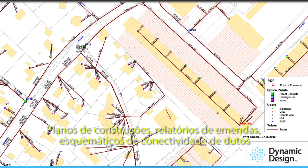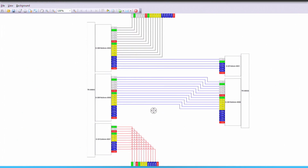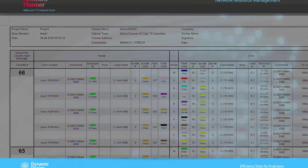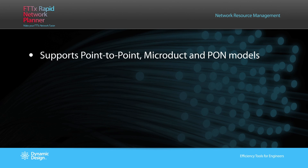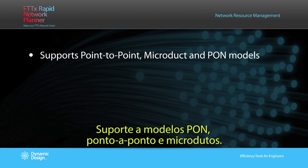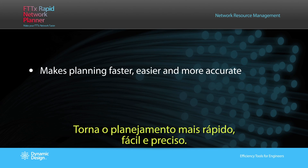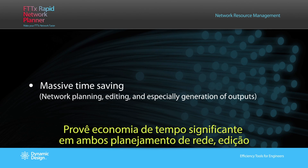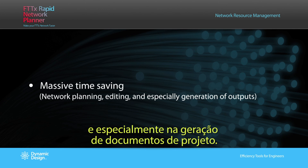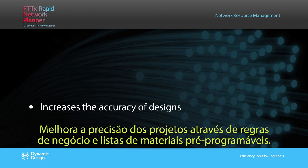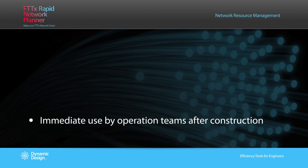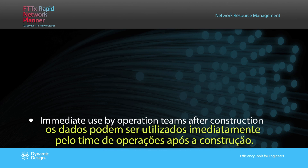Construction plans, splice reports, duct connectivity reports, plus a variety of additional standard and configurable reports are available. The key benefits of the planner are: it supports point-to-point, microduct and pond models; it makes planning faster, easier and more accurate; it gives massive time savings in network planning, editing and especially the generation of outputs; and it increases the accuracy of designs via preset material lists and business rules. As ConnectMaster is a design and operational tool, data can be immediately used by operation teams after construction.